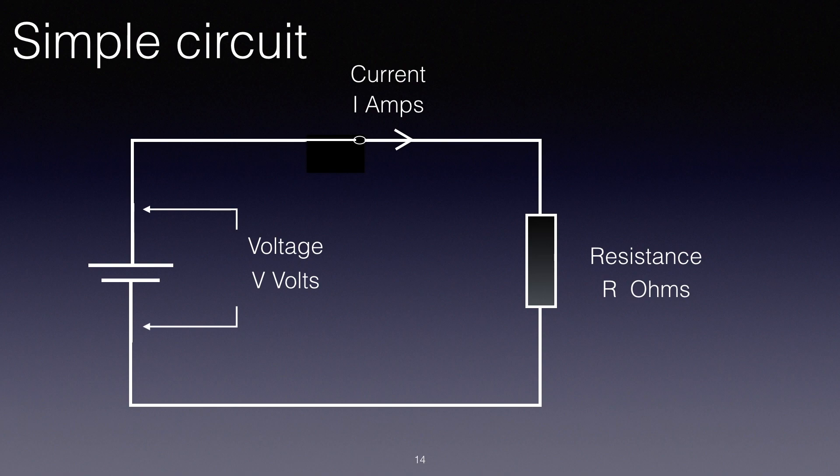For example, it could be 2 volts, 10 amps, and 6 ohms. But because we don't know the values, we just replace them by letters. So V volts, I amps, and R ohms.